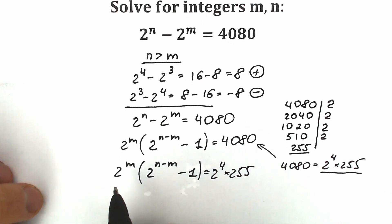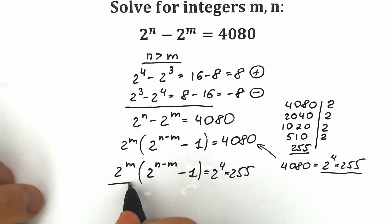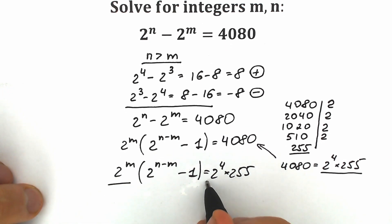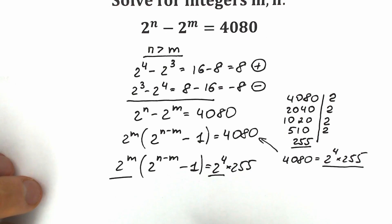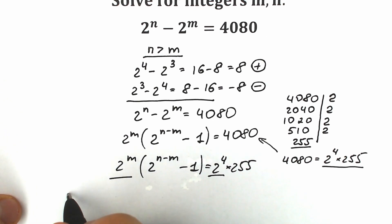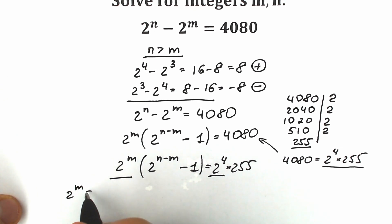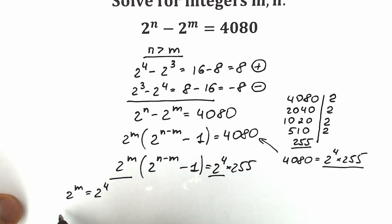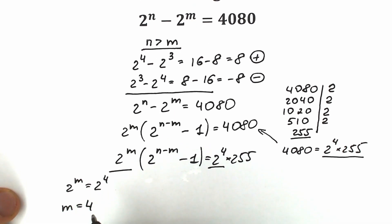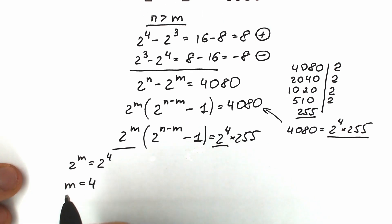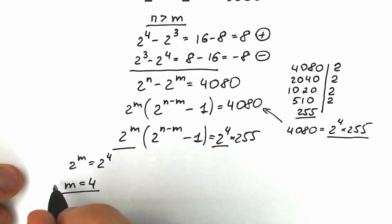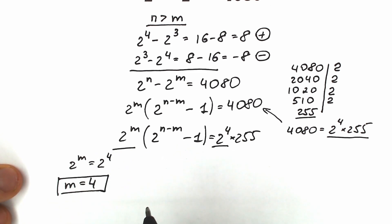If we look closely we have 2 to the power m on the left and 2 to the power 4 on the right. So we can create our first equation: 2 to the power m equals 2 to the power 4, which gives us m equals 4. Now we need to find our n.